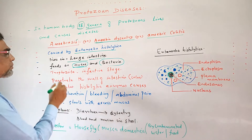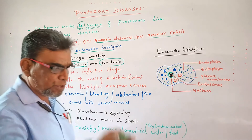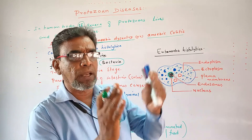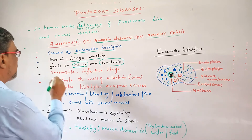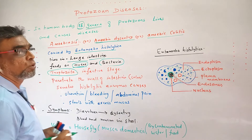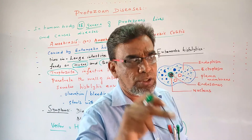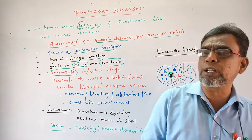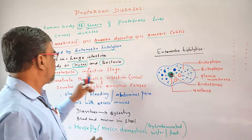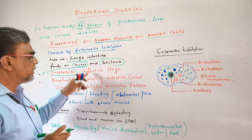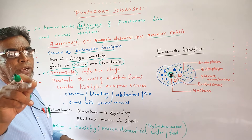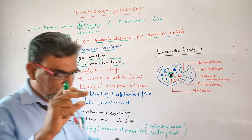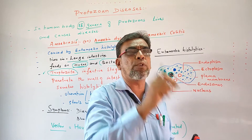This Entamoeba histolytica has a life history; it has several stages and undergoes modifications inside the body. Out of this life history, one stage is called trophozoite. Trophozoite is an important stage — this stage causes the disease. The trophozoite is the infective stage of Entamoeba histolytica, and it penetrates the large intestine.